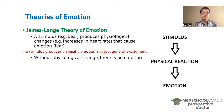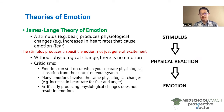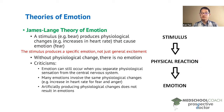There are a number of criticisms of this theory, and most of these criticisms are experimental. For example, there were scientists that severed the sensory afferent nerves that deliver sensory information to our central nervous system, and they found that these animals could still express emotion. So clearly you didn't have to have the physiological change in order to produce emotion.